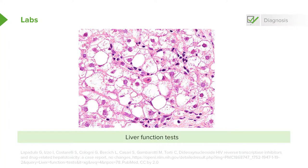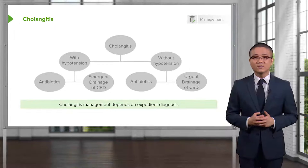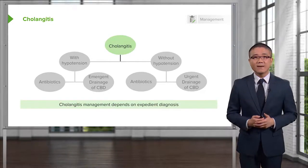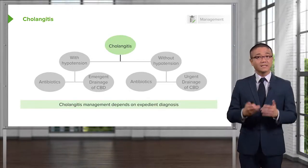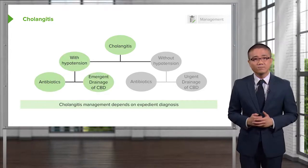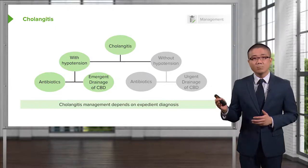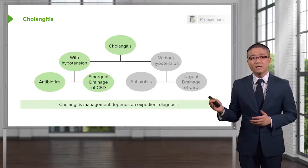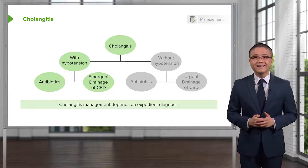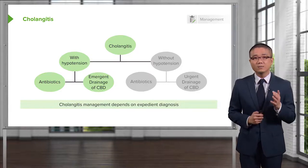In terms of laboratory findings, liver function tests may be abnormal as previously described. How do we manage cholangitis? The schematic discusses whether or not the patient has any hemodynamic instability. Does the patient have hypotension? With hypotension, the diagnosis is then biliary sepsis. Antibiotics are immediately started and the surgical emergency requires emergent drainage of the common bile duct so that the bile has appropriate drainage.